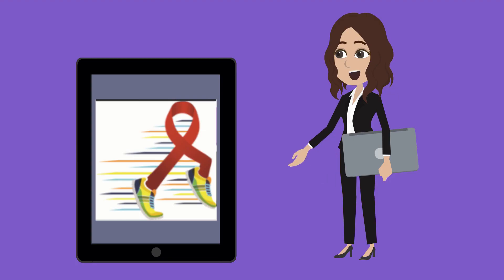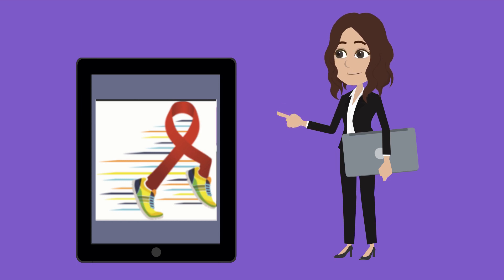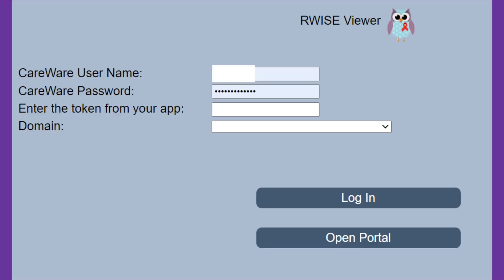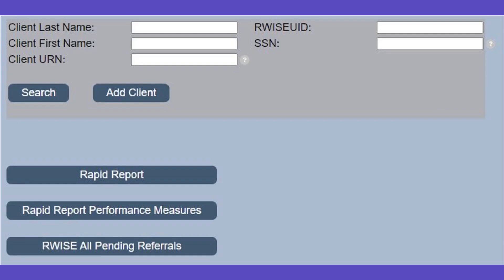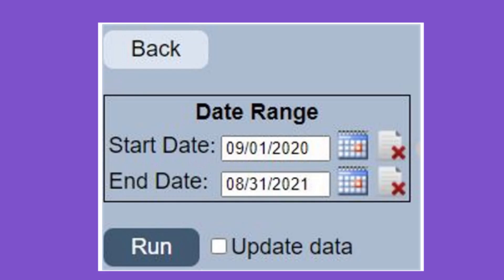To access the Rapid Start module, go to Rwise and click on Rwise Viewer. Then enter your login information. From the home page, click on Rapid Report Performance Measures. Now select the appropriate start and end dates that you are going to analyze and click Run.